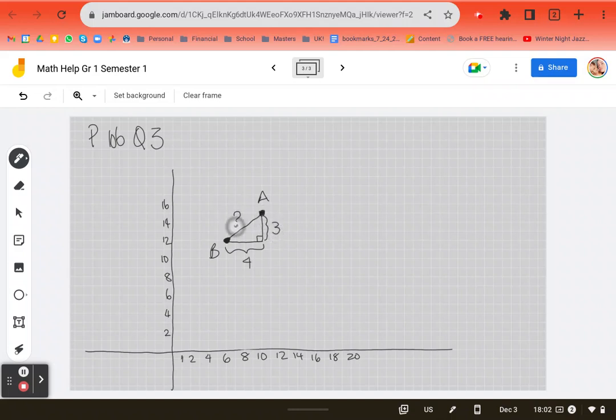So what is AB? Well, we know how to do that. We say, oh, I hate C. I hate C. It always messes me up. Let's do the hypotenuse squared equals side 1 squared plus side 2 squared.